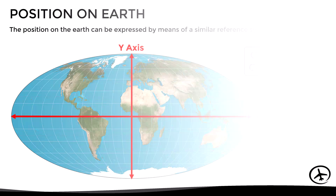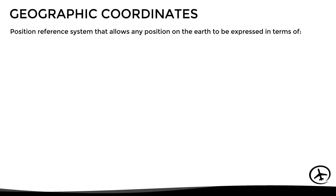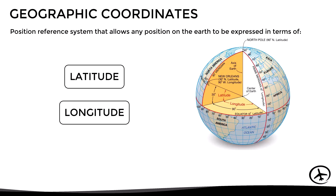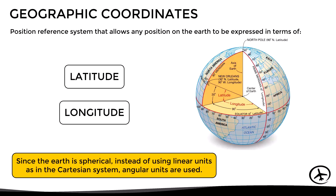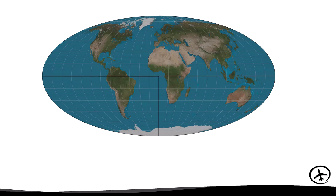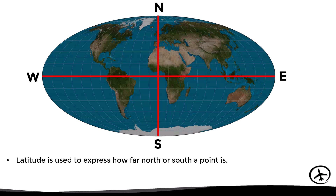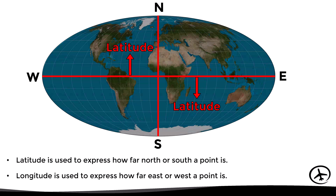The geographic coordinates are a position reference system that allows any position on the earth to be expressed in terms of latitude and longitude, which are equivalent to the units of the x and y axes in the Cartesian system. Since the earth is spherical, angular units are used instead of linear units. Latitude is used to express how far north or south a point is, while longitude is used to express how far east or west a point is.